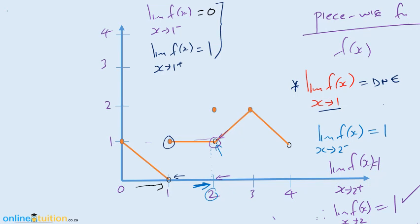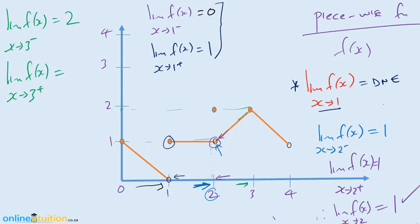Let's look at x approaching 3. The limit of f of x as x approaches 3 from the left: as we get closer to 3, the function actually has a limit — the value is 2. The limit of f of x as x approaches 3 from the right, 3 plus: as you get closer and closer to 3, the function approaches 2 there. Therefore, the limit of f of x as x approaches 3 is 2.